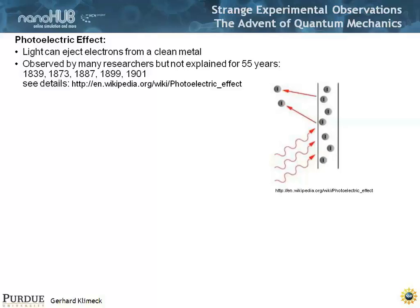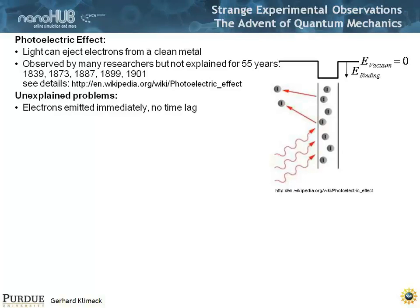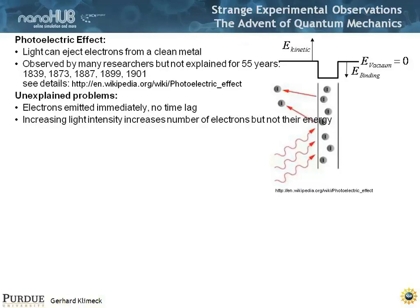But there were some puzzling things about this. If there is a binding energy of these electrons in this material, and you set the vacuum level to zero, you would think that electrons should gather up some energy until they're ready to come out. But it turns out, as soon as you turn on the light, the electrons come out — not a gathering of energy effect, but they come out immediately. And increasing the light intensity — the stronger the light you put in — it increases the number of electrons, but not their energy. You would normally think you put in more energy, they all have more velocity and come out with a higher energy. But that wasn't the case.